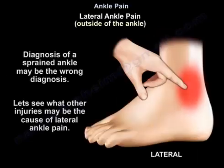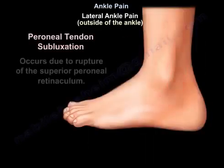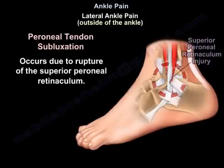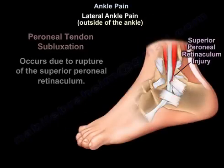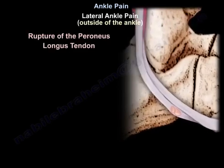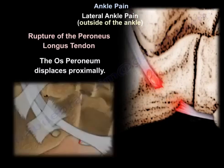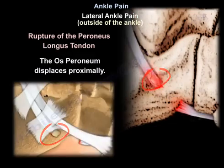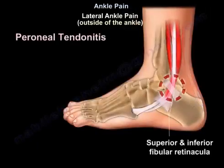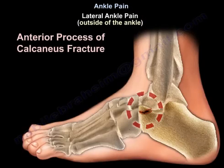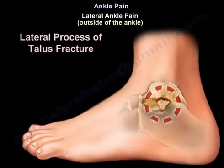Diagnosis of a sprained ankle may be the wrong diagnosis. Other causes of pain on the outer side of the ankle include peroneal tendon subluxation due to rupture of the superior peroneal retinaculum, rupture of the peroneus longus tendon with proximal displacement of the os peroneum, peroneal tendonitis, an anterior process of the calcaneus fracture, or a lateral process of the talus fracture.